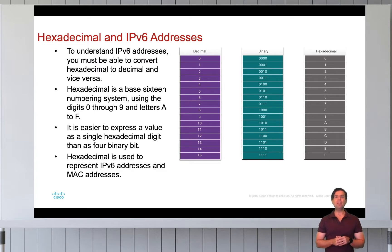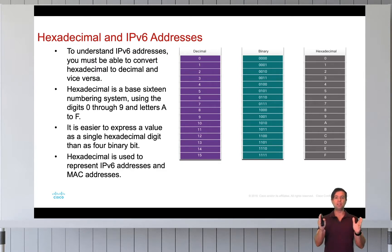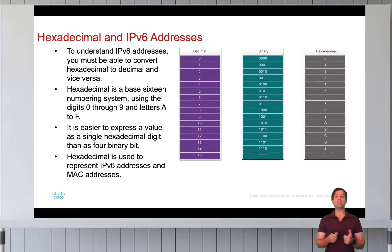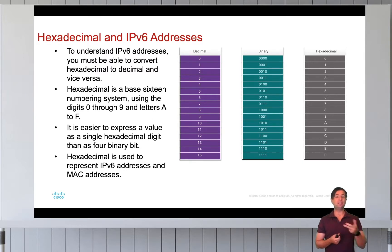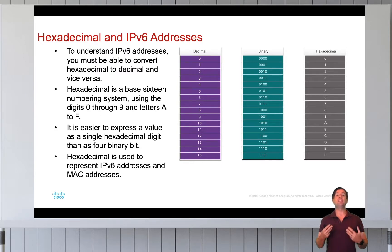In other words, hexadecimal uses 0 up to 9. Then for 10 it uses A, for 11 it uses B, for 12 it's C, for 13 it's D, for 14 it's E, and for 15 it is F.